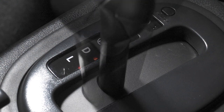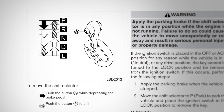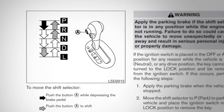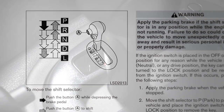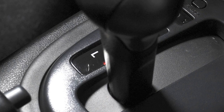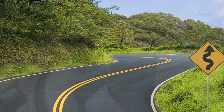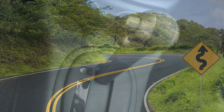The L or low position on a CVT is the same as the 1 position on automatic transmissions. Use this position when maximum engine braking is needed, for example when approaching sharp curves.